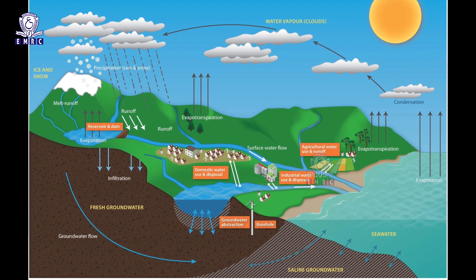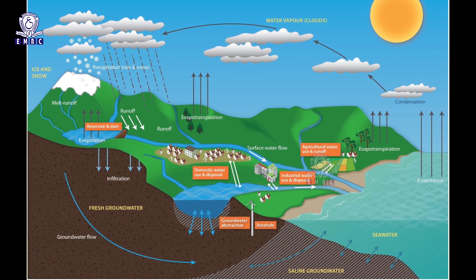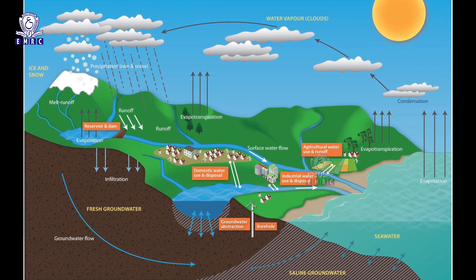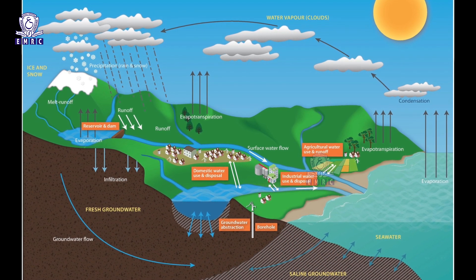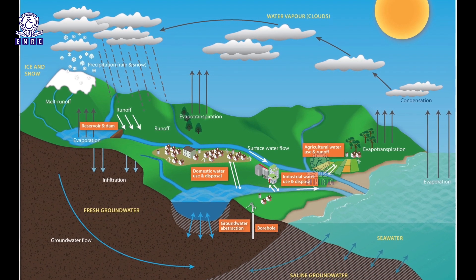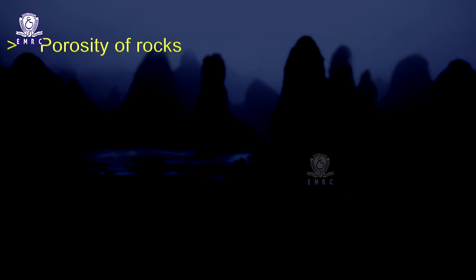The underground water does not flow like a river. The flow of river water is measured in meters per second, but the flow of underground water is so slow that it is measured in meters per day or per year. The factors responsible for the slow motion of underground water are: 1. porosity of the rock, and 2. permeability of the rocks.